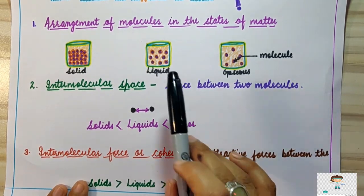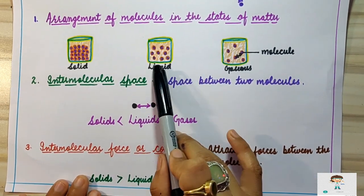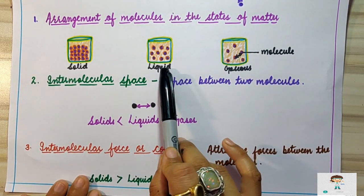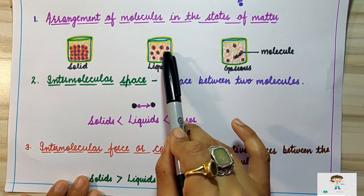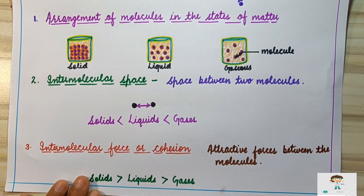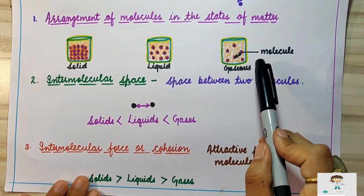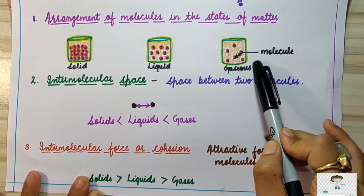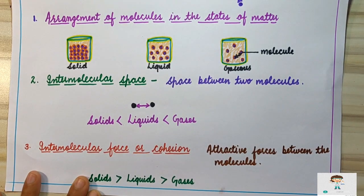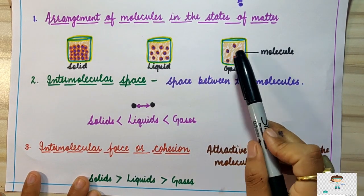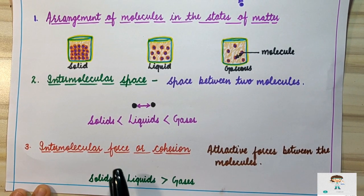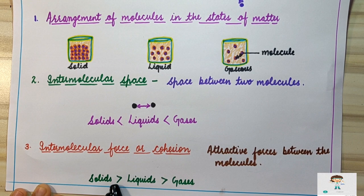In liquid state, intermolecular forces are less than those of solid because particles are loosely packed and have intermolecular spaces, resulting in fewer interactions. In gaseous state, particles are independent of one another and very far apart, so their interactions are minimum and therefore their intermolecular forces are minimum.